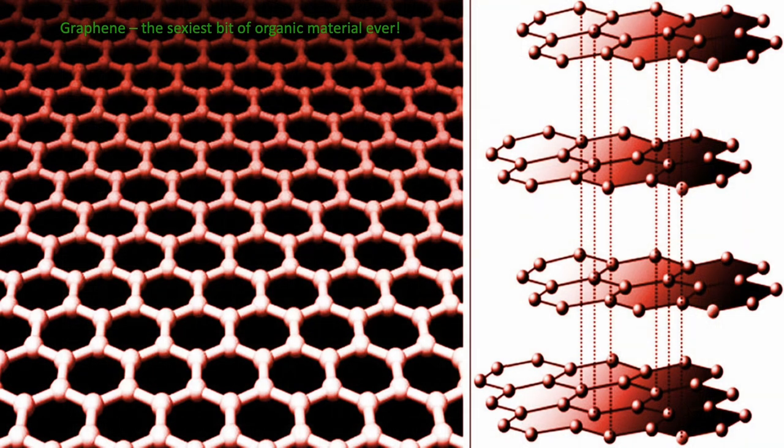Now we're going to get back to the original business here. Thank goodness. Graphene is the sexiest bit of organic material ever — a single layer of carbon atoms arranged like chicken wire in a hexagonal lattice nanostructure. It is extremely lightweight, elastic and strong. The strongest material ever tested, that distributes force from an impact. If you stack two layers of graphene on top of each other with a slight rotational misalignment, it shifts from being an insulator to a superconductor.